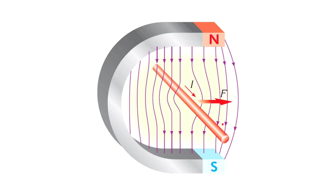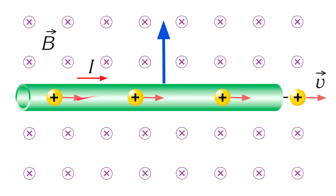From previous lessons we know that if a current starts to flow through a wire, the wire will experience a force due to the magnetic field, as shown in the picture. Current is the result of motion of charged particles, and it's obvious that a beam of charges would also experience a force due to the magnetic field. In fact, the magnetic force acting on the wire is because it is exerted on the moving charged particles.